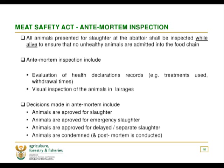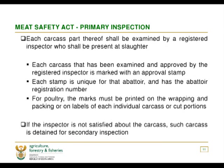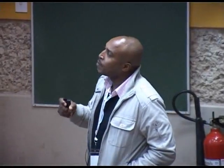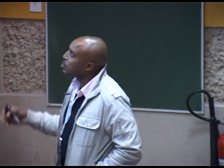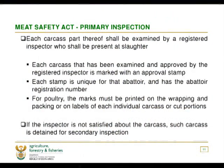Each carcass — that is primary meat inspection — shall be examined by a registered meat inspector who must be present at the abattoir full-time, to ensure that when animals are brought in and when they are slaughtered, he performs the inspection. Each carcass that has been examined and approved by the registered meat inspector is marked with an approval stamp. Each stamp is unique to that abattoir and carries the abattoir registration number. For poultry, the marks must be printed on the wrapping and packaging or on labels of each individual carcass or cut portion.